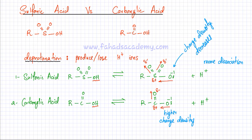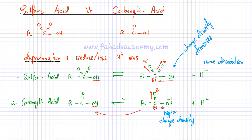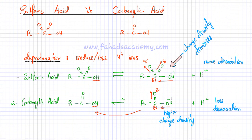This higher negative charge density is going to attract H⁺ strongly, so there is more chance of a backward reaction occurring in carboxylic acid — and hence comparatively less dissociation compared to sulfonic acid. This is the reason why sulfonic acids are comparatively stronger acids than carboxylic acids: mainly because of two oxygens present in sulfonic acid, whereas in the carboxylic acid group there is only one oxygen present.